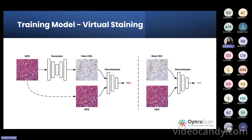We based our model on a generative adversarial network — the GAN framework. In simple terms, think of it as two things: a generator and a discriminator. We fed our H&E and IHC stained real images to the model. The generator's job is to generate an IHC stained image out of the real H&E stained image, as close to the real IHC stained image as possible. The discriminator's job is to discriminate between the real and virtually stained IHC image — it compares the images and says 'it's fake, generator — go and generate another image.'